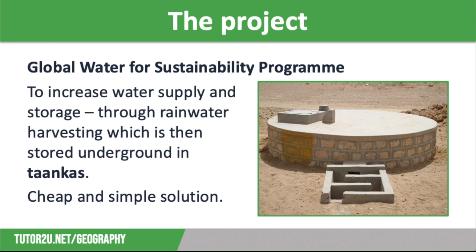A key part of the project is collecting and storing water through rainwater harvesting, which is a cheap and simple solution, appropriate to the needs of local people. With this system, water collected from roofs makes its way down to underground storage tanks known as tankers. These are about three metres across and three to four metres deep, as shown on screen. The water stored saves people from the daily task of walking long distances to fetch water from sources which are often contaminated.